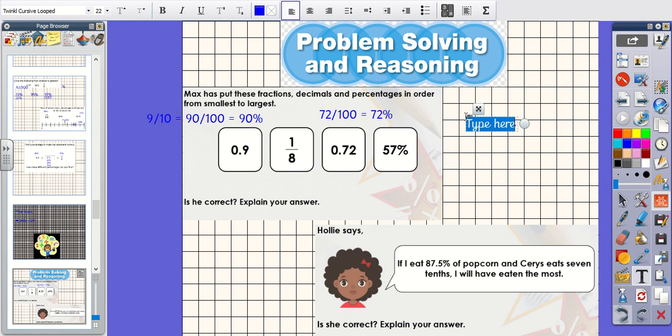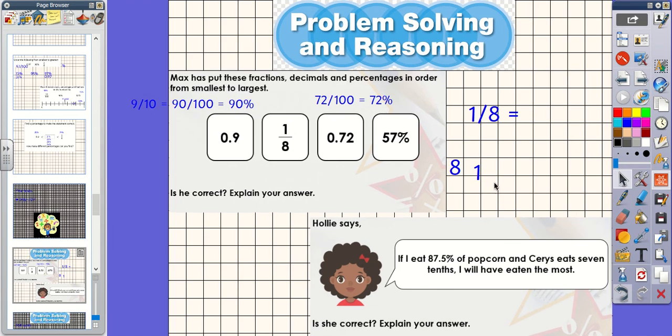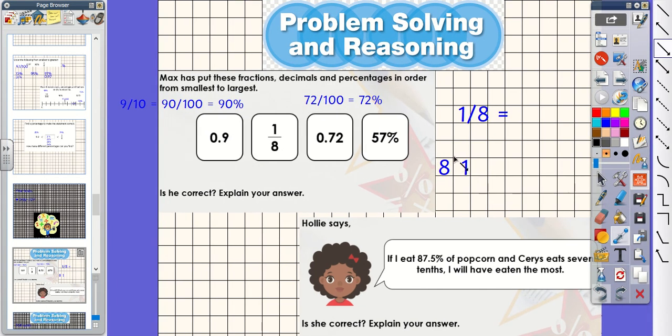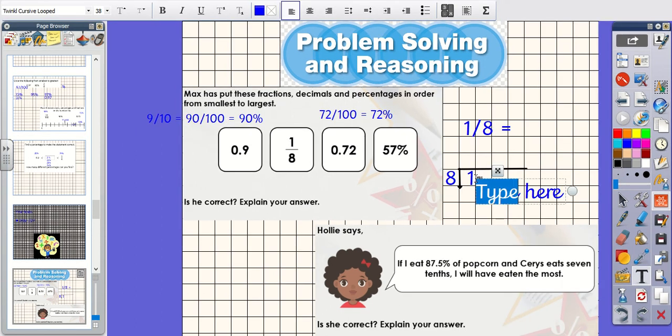Now I've got 1 eighth. So I need to work out my percentage with this, because 8, the denominator, is not an easy number to get to 100. So I'm going to do 1 and I'm going to divide that by 8 using the bus-stop method of short division. I know straight away that I'm going to need decimal points. So I'm going to put that in at the bottom and then 1 up here as well. And I'm also going to put in a 0 to get me started.